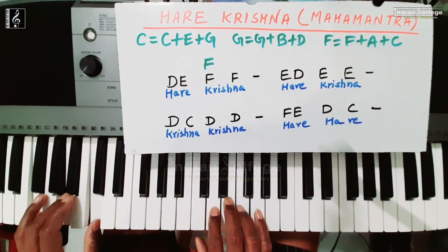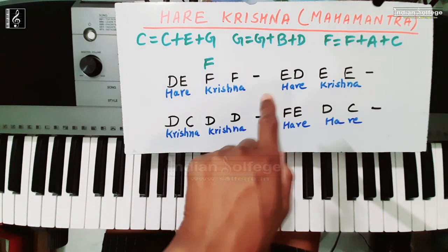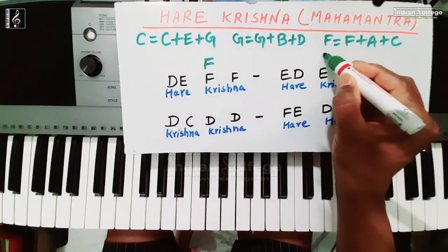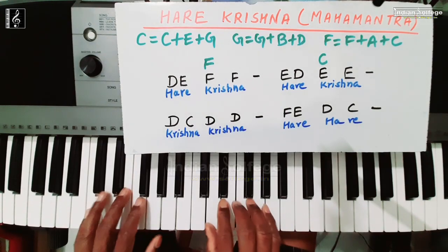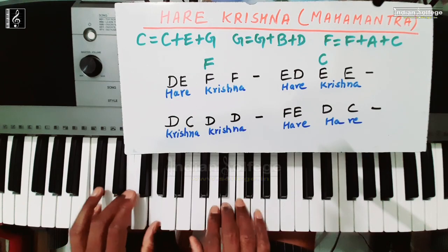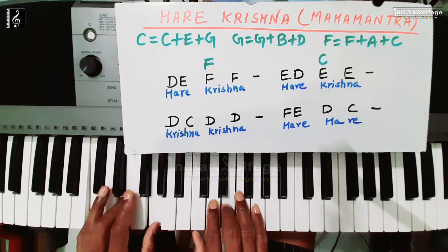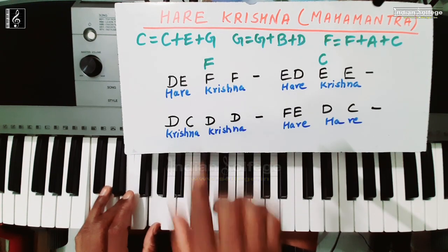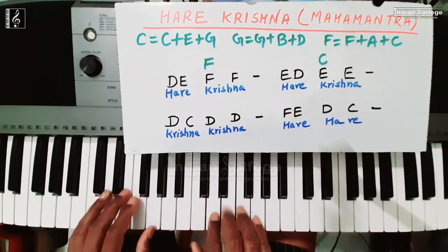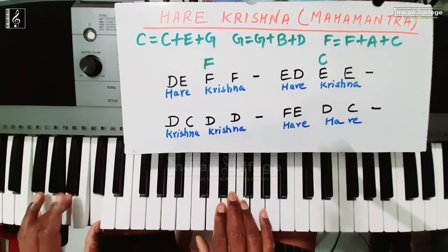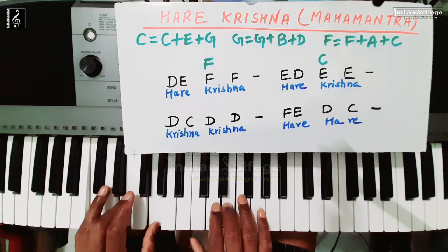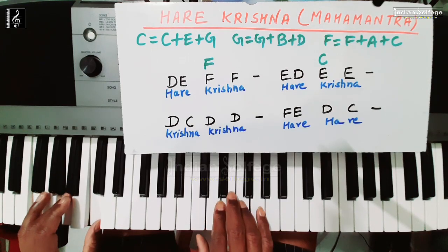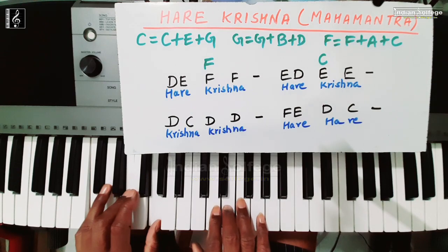Next part है E D E E — इसमें C major chord लगेगा E के साथ। अब इन दोनों parts को play करने की कोशिश कीजिए: D E F F, फिर E D E E। Keep repeating जब तक आप comfortably नहीं play करते।